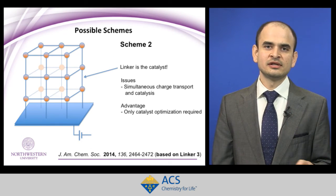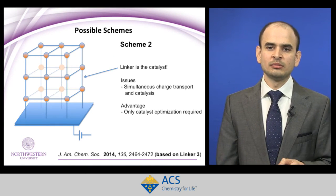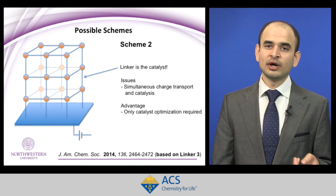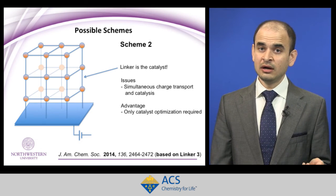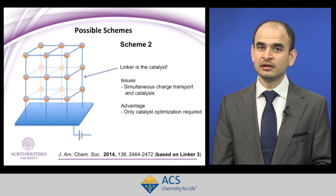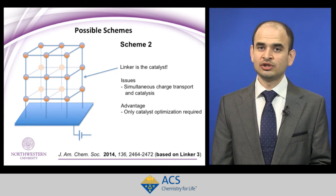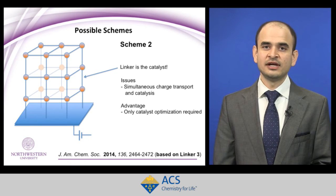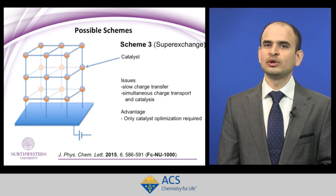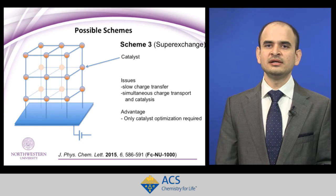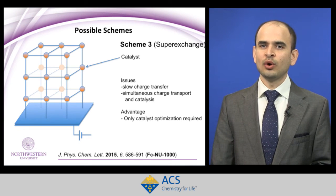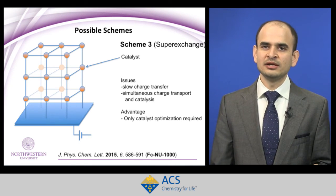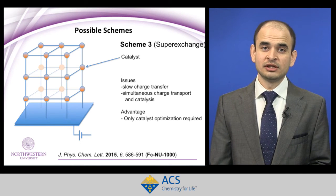You can find references at the bottom. This scheme — in which the organic linker transports charges and the catalyst is placed on the node — is scheme one, but there are other possibilities. In the second scheme, you can have a redox-active linker that is also a catalyst, doing charge transport as well as catalysis. Or a third scheme, in which we only have a catalyst deposited at the node and the charges go across from catalyst to catalyst using linker-mediated superexchange.